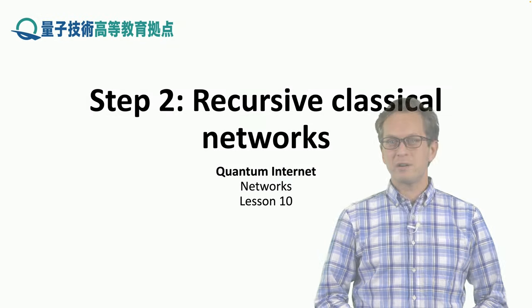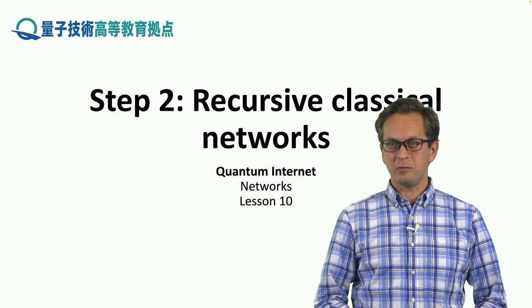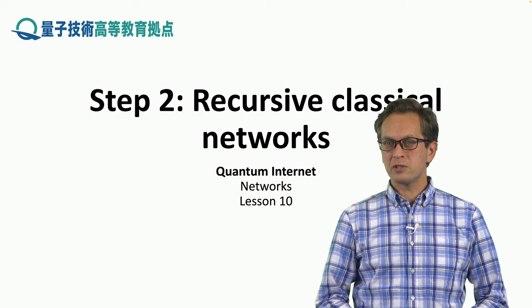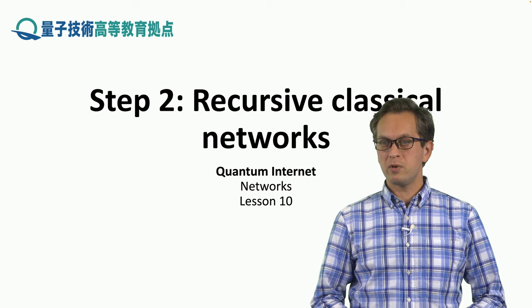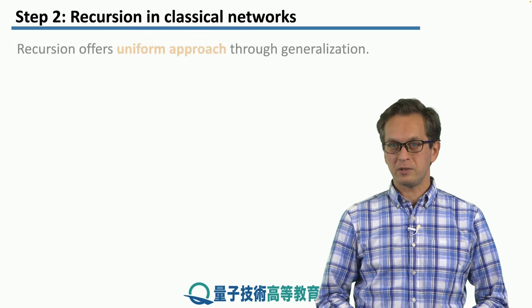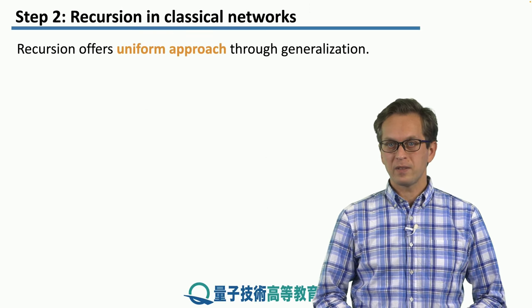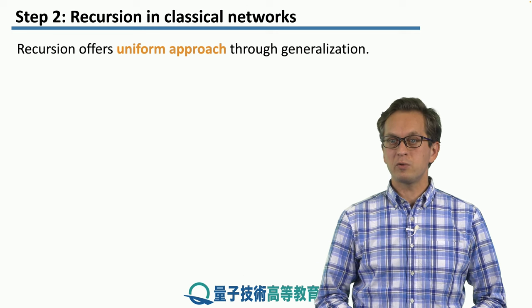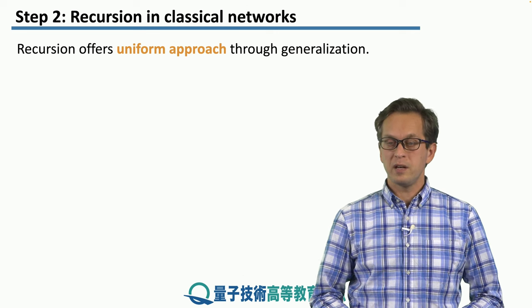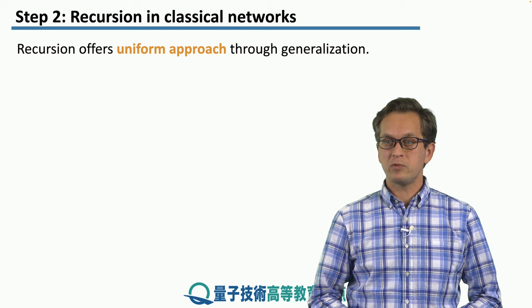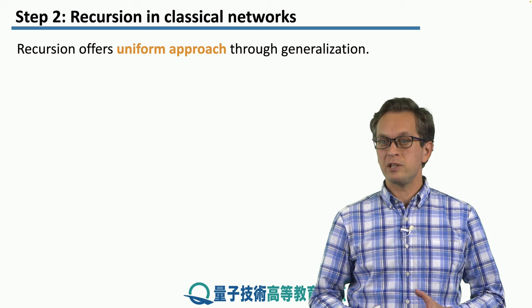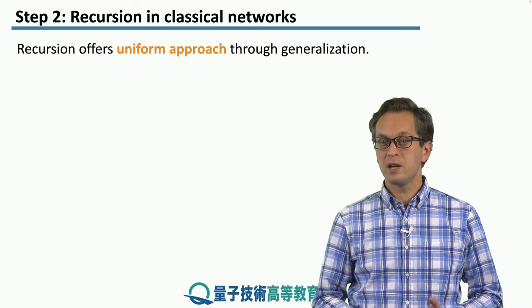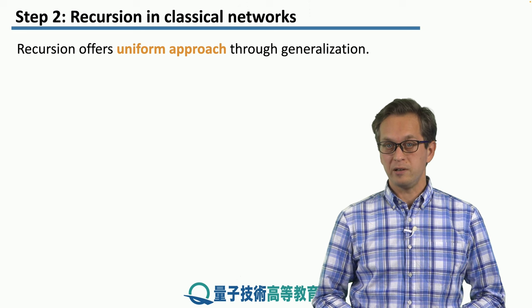Step 2: Recursive classical networks. In this step we're going to use recursion to forward information through a classical network. Recursion offers a uniform approach through generalization. This generalization occurs when we consider a subset of a network as a single node at a different layer.